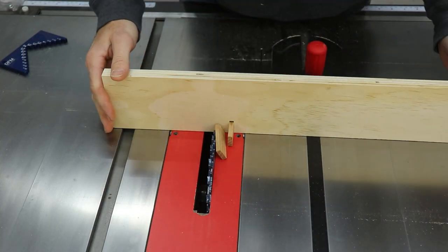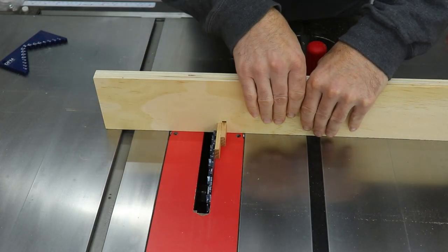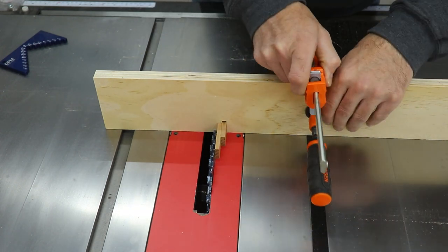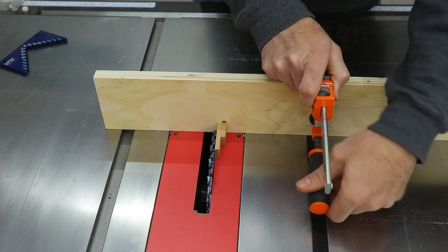To get the gap correct you just use a piece of the same strip that you put in the jig. Put it between the blade and the pin, slide it over to where it's just touching and then clamp down the jig to the miter gauge.